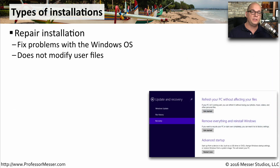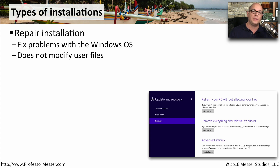If you already have a system that has an operating system installed but you're having some problems with the OS, you may want to try troubleshooting by running a repair installation. This will run through a Windows installation, but it will simply replace or repair any files that might be bad. This is not going to modify any of your files, your documents, or your installed applications, but it might solve problems with your operating system.